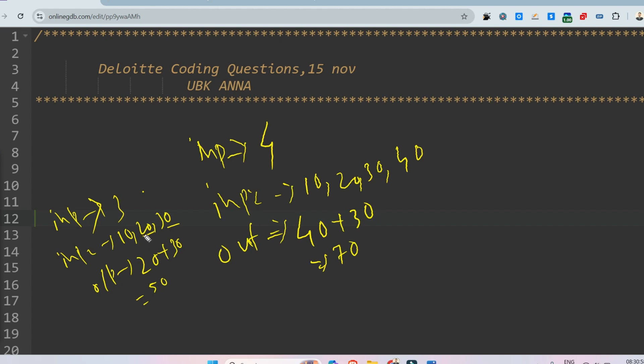So I hope you understood. Let me give you one more example. If the input is 5 and elements are 1, 2, 3, 4, and 5, what is the output? Please give the answer in the comment section.